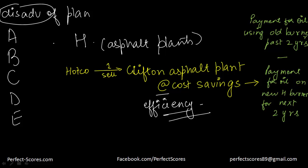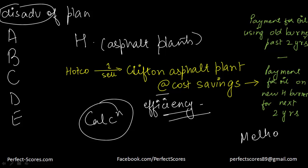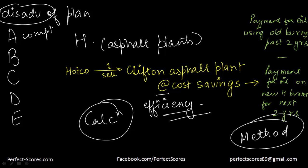We have to find the disadvantage — maybe a problem in the calculation or in the method. Option A says another manufacturer's introduction to the market of a similarly efficient burner. That is talking about competition, but once the deal is made between these two, it does not matter. So A is gone.